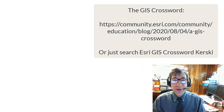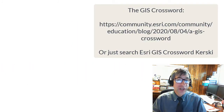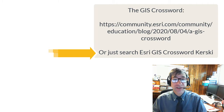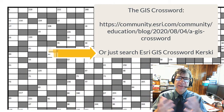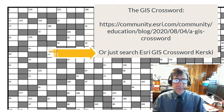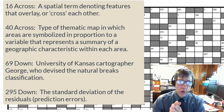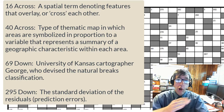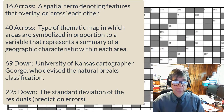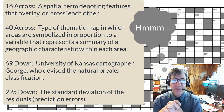Think you could do pretty well at a GIS, or geographic information systems, themed crossword puzzle? Consider these clues. 16 across: a spatial term denoting features that overlay or cross each other.